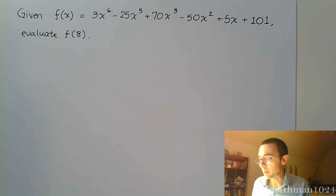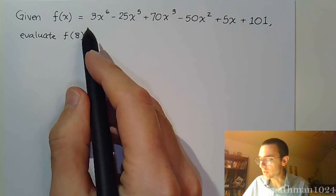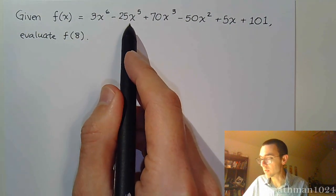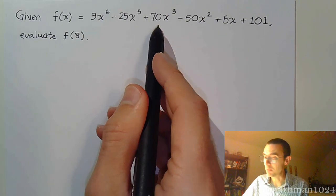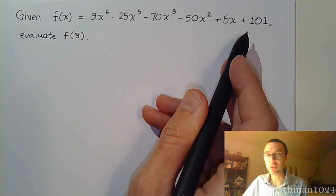Take, for example, this guy. We have f(x) is equal to 3x^6 - 25x^5 + 70x^3 - 50x^2 + 5x + 101. And now we need to evaluate f(8).